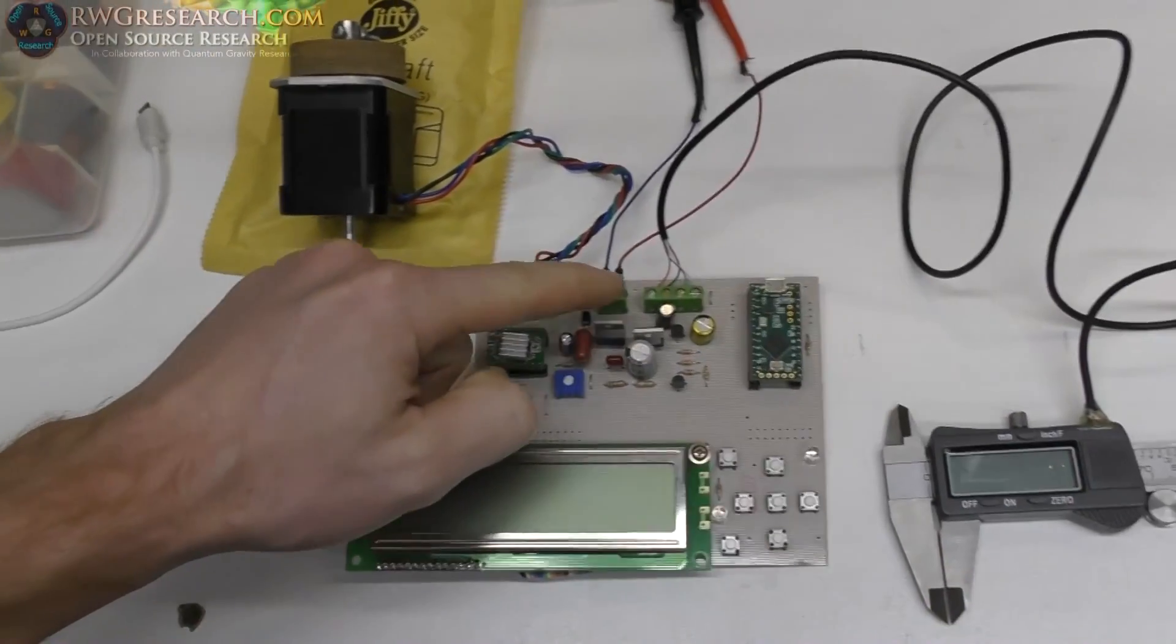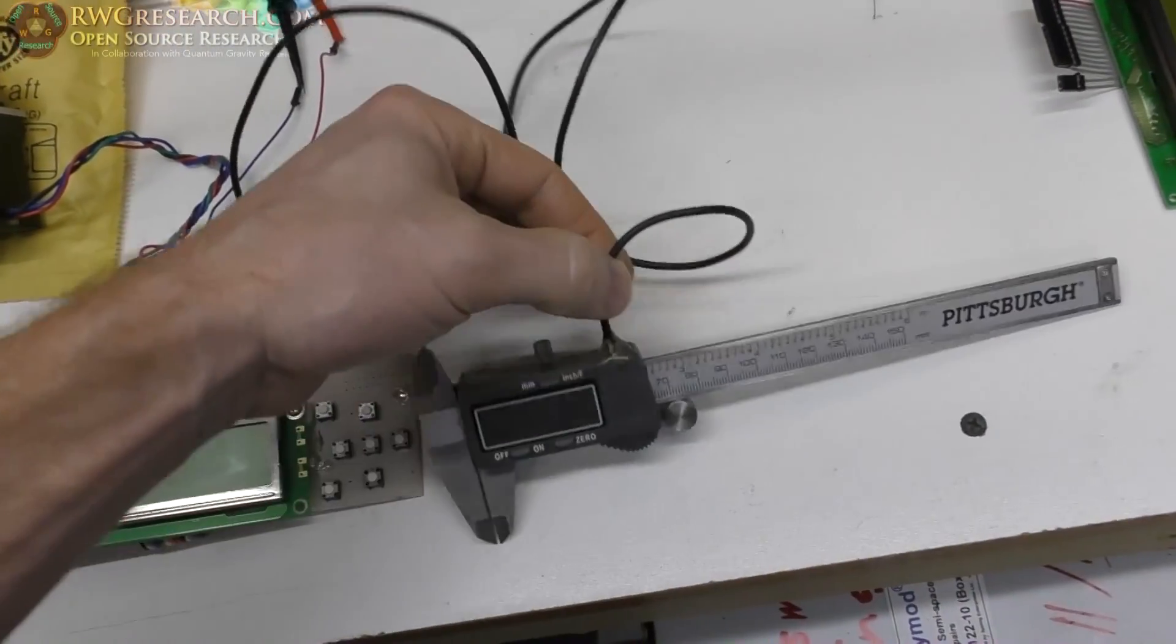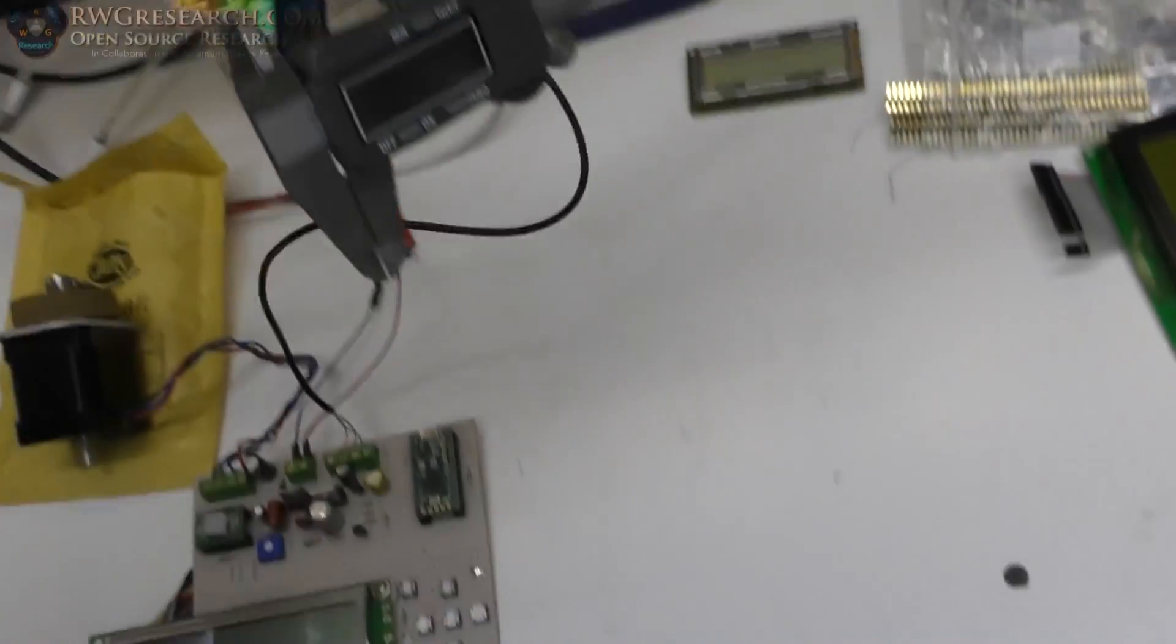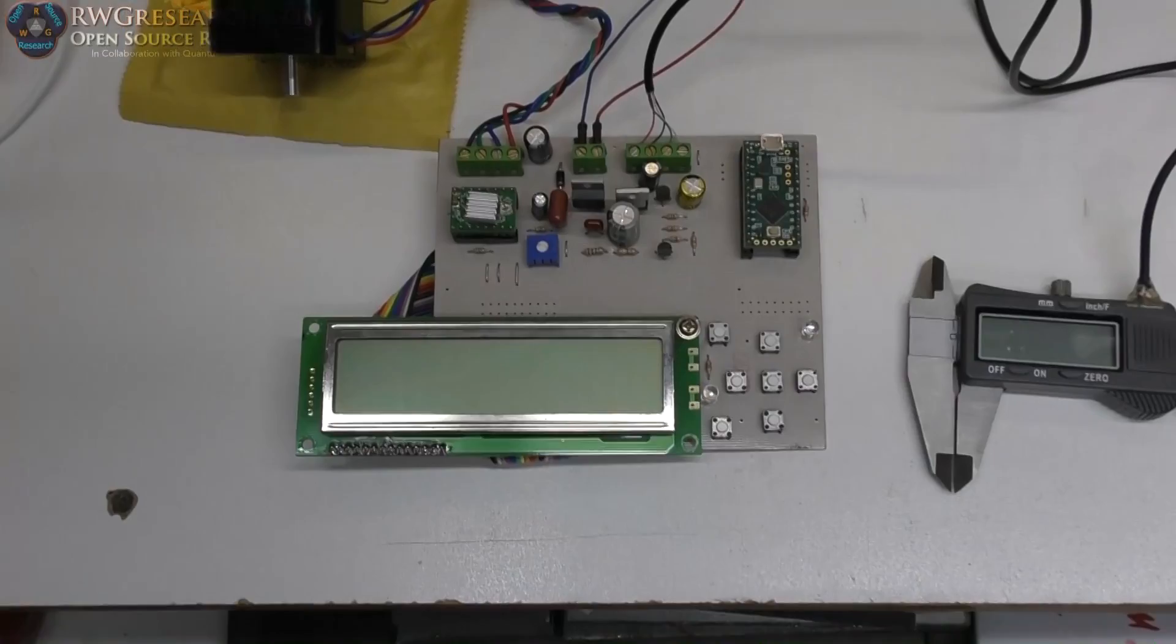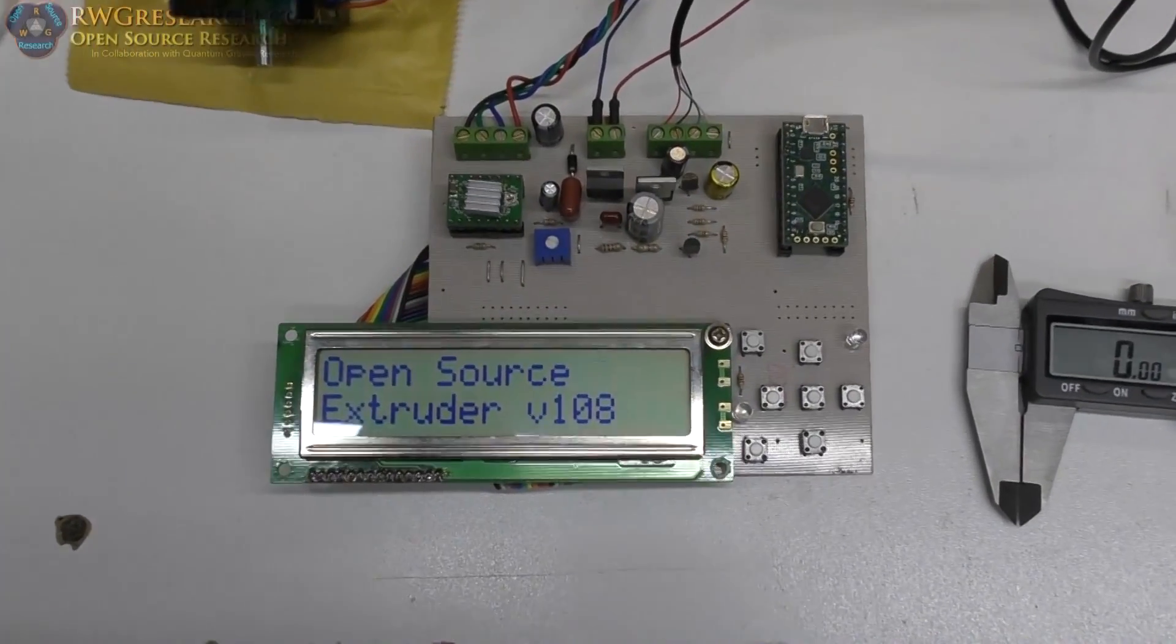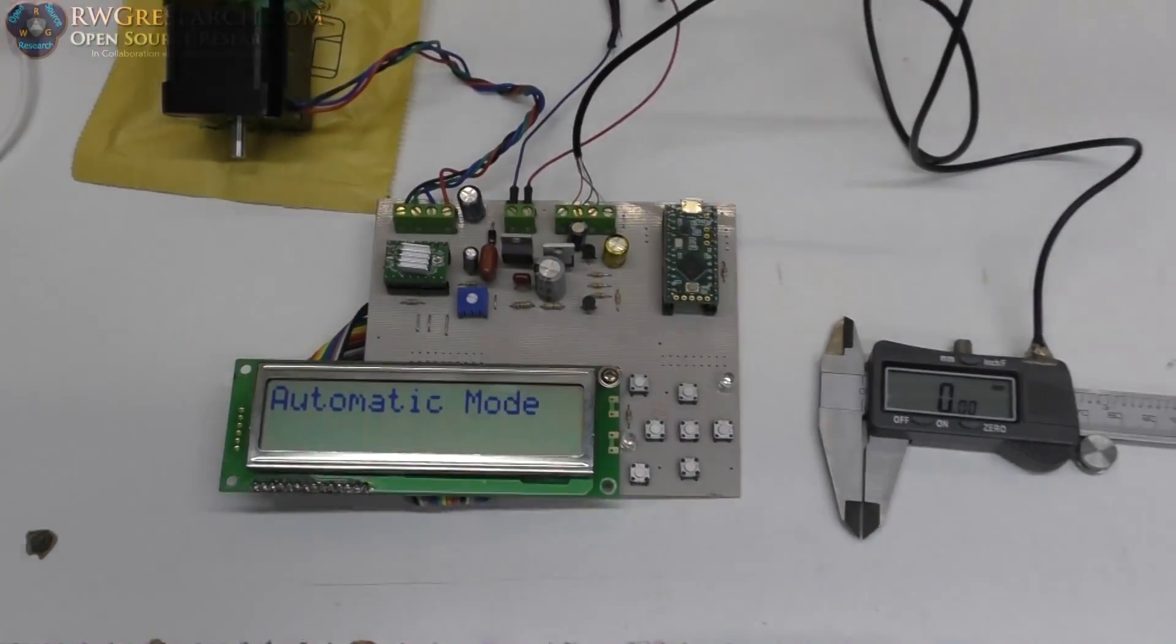Now, I got the motor connected. Terminal blocks. And, the calipers. That glue is great. Really worked well, that hot glue. So, I'll turn it on. And, here we go. Open extruder. Automatic mode.